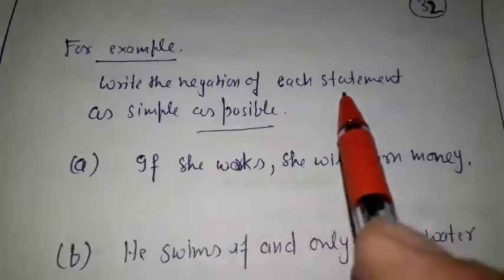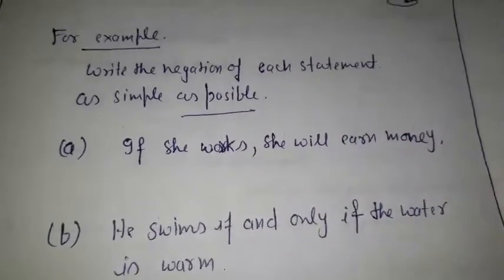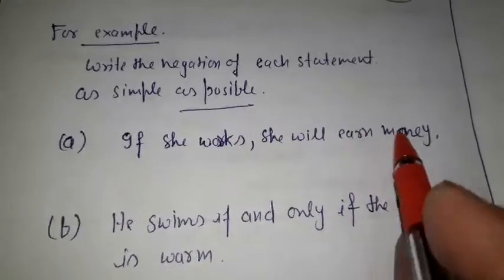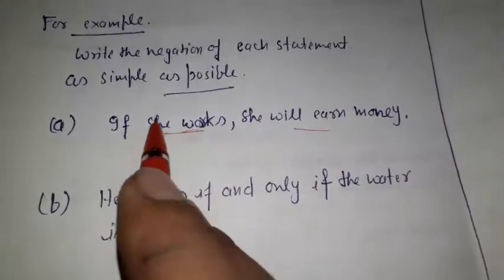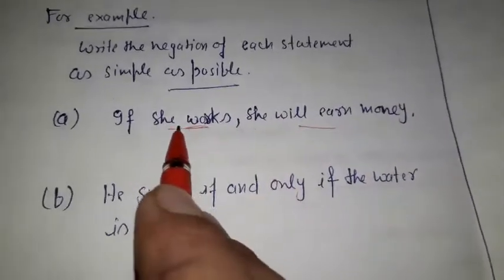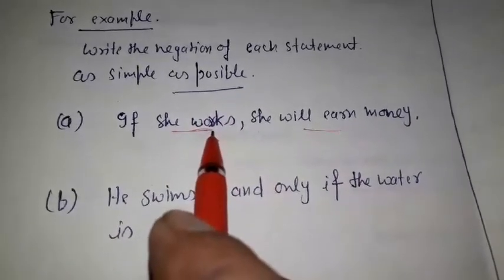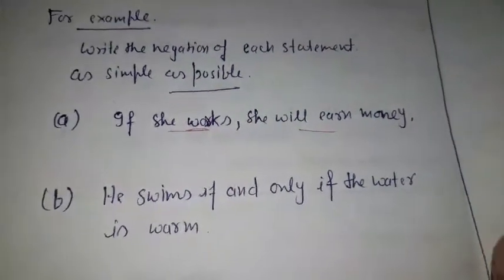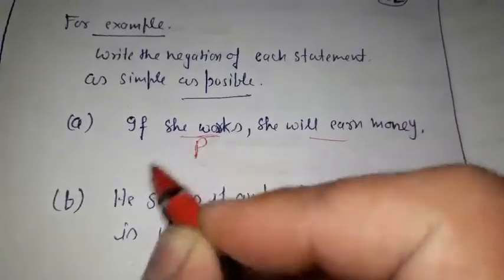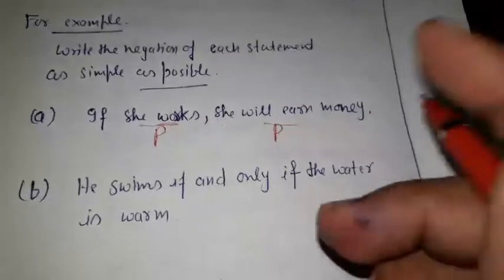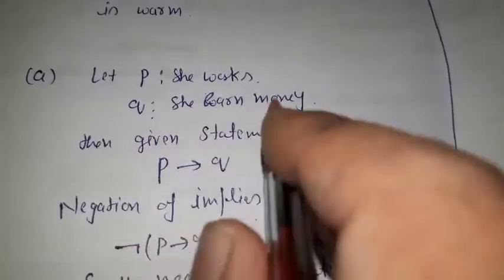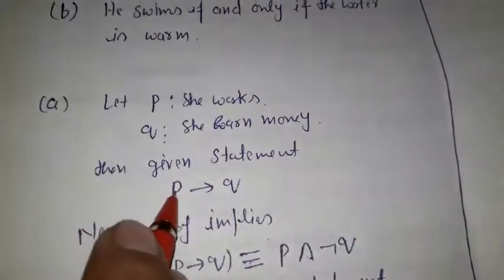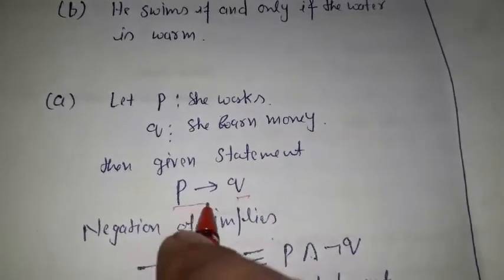For example, write the negation of each statement as simply as possible. The first statement is: 'If she works, she will earn money.' This is a conditional statement containing if-then. There are two atomic propositions: 'she works' and 'she earns money'. Let P = 'she works' and Q = 'she earns money'. The statement 'if she works then she earns money' is represented as P implies Q.